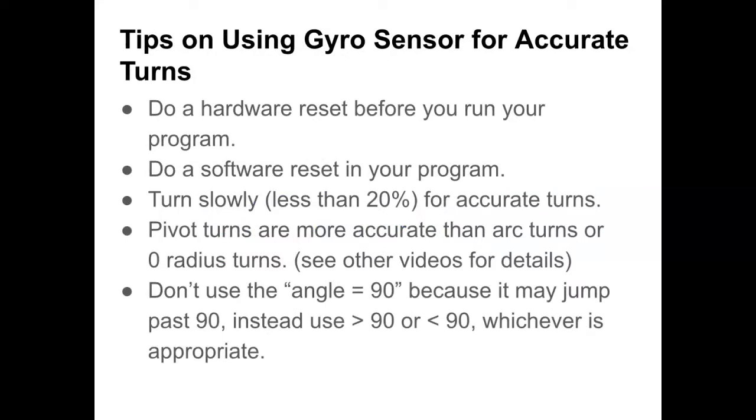Here's some general tips: do a hardware reset before you run your program. Before you download your code, especially if this is for some competition, reset that gyro sensor. Then do a software reset in your program. I'm going to recommend you do that almost before every turn that needs to be measured. Turn slowly for really accurate turns, maybe around 20%, 25%, or even slower, though that does eat into your time. I have found that pivot turns are more accurate than arc turns or zero radius turns. I haven't made them yet, but I plan on doing a future video on those three types of turns.